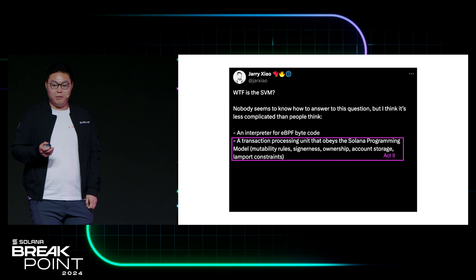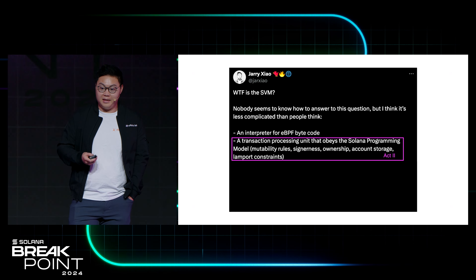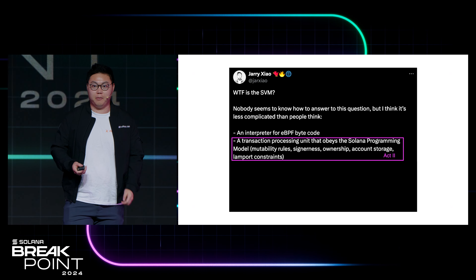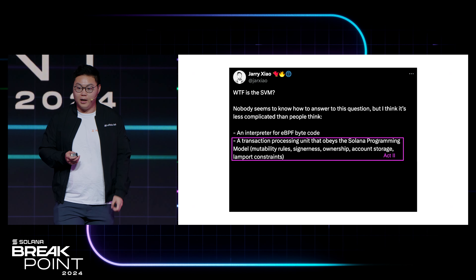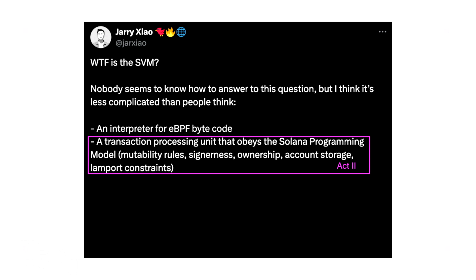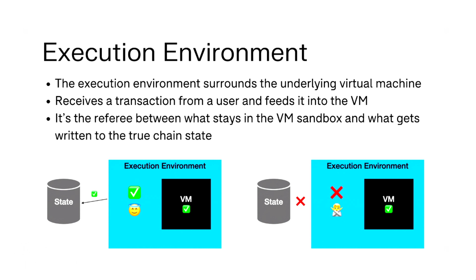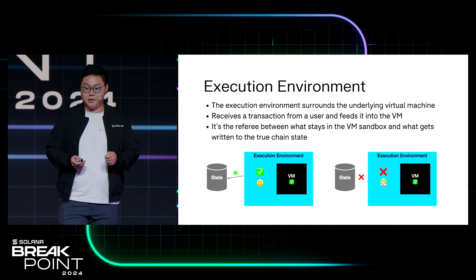The second thing you need in an SVM — really the counterpart to the interpreter — is the transaction processing unit, which I'll refer to as the execution environment. The execution environment follows something known as the Solana program model, which is essentially just a set of rules. I like to think of this as a type of referee. The execution model wraps around the underlying virtual machine and tells the system whether the VM is enacting a state change that is acceptable or one that is unacceptable.